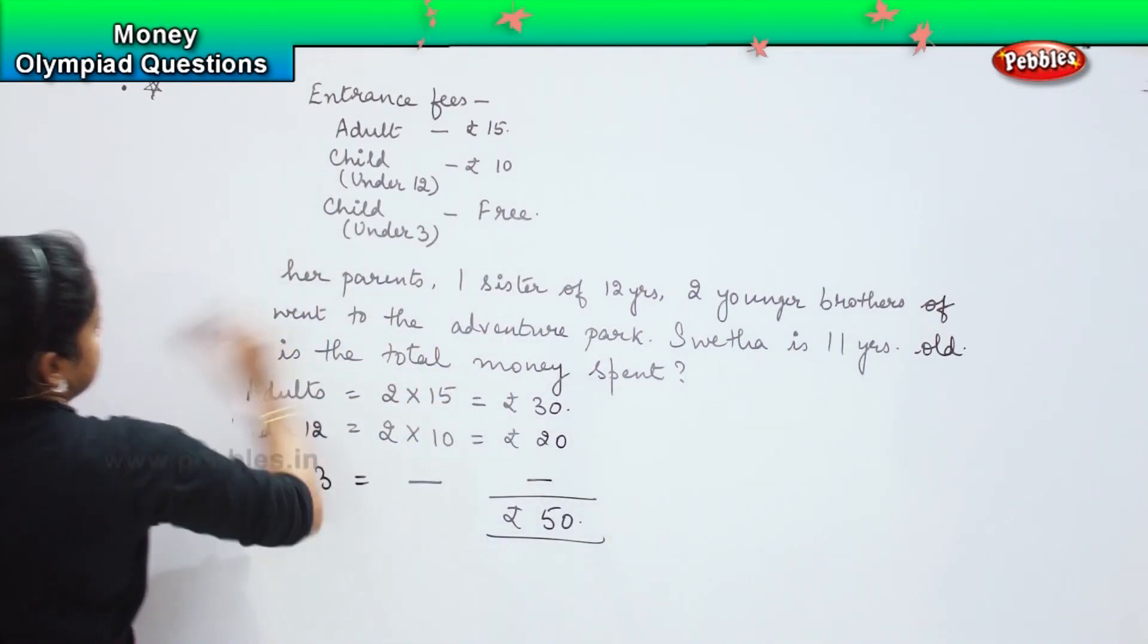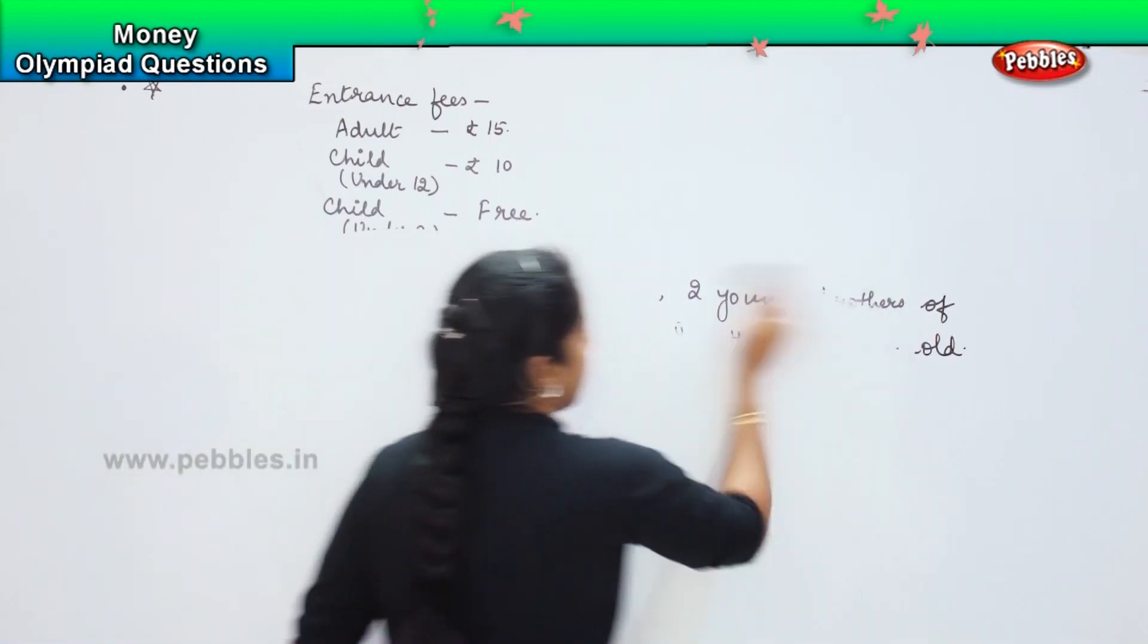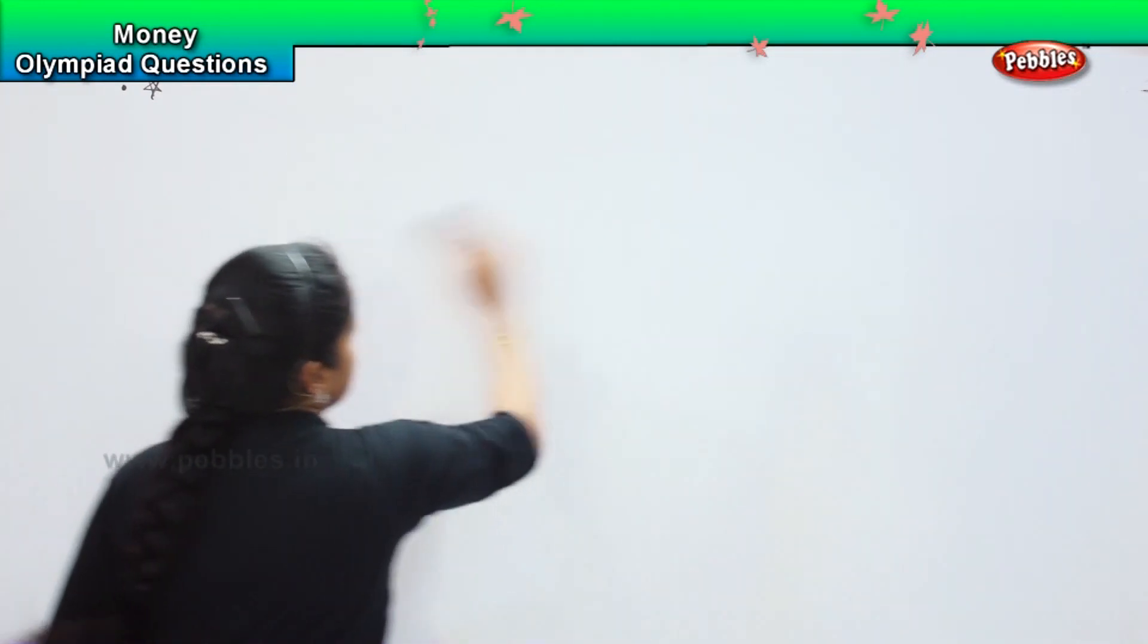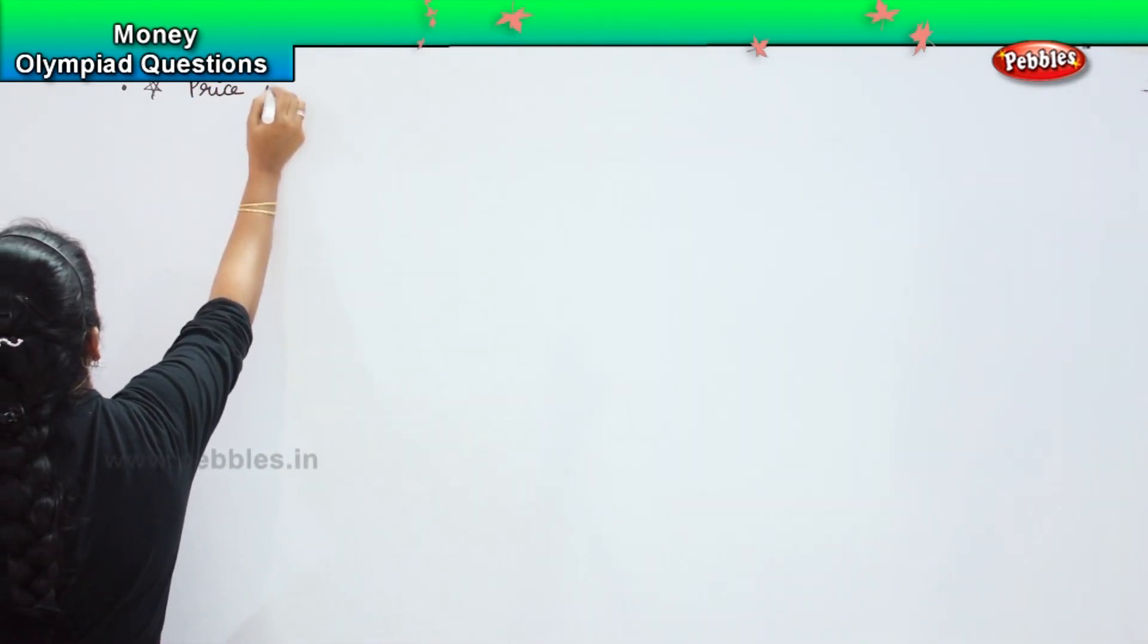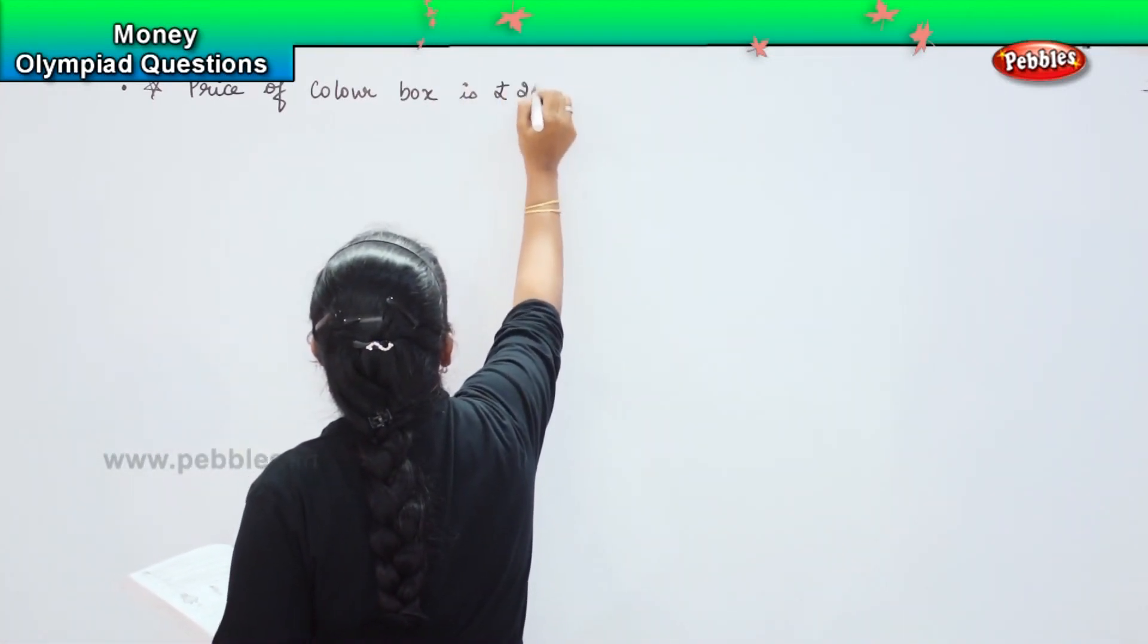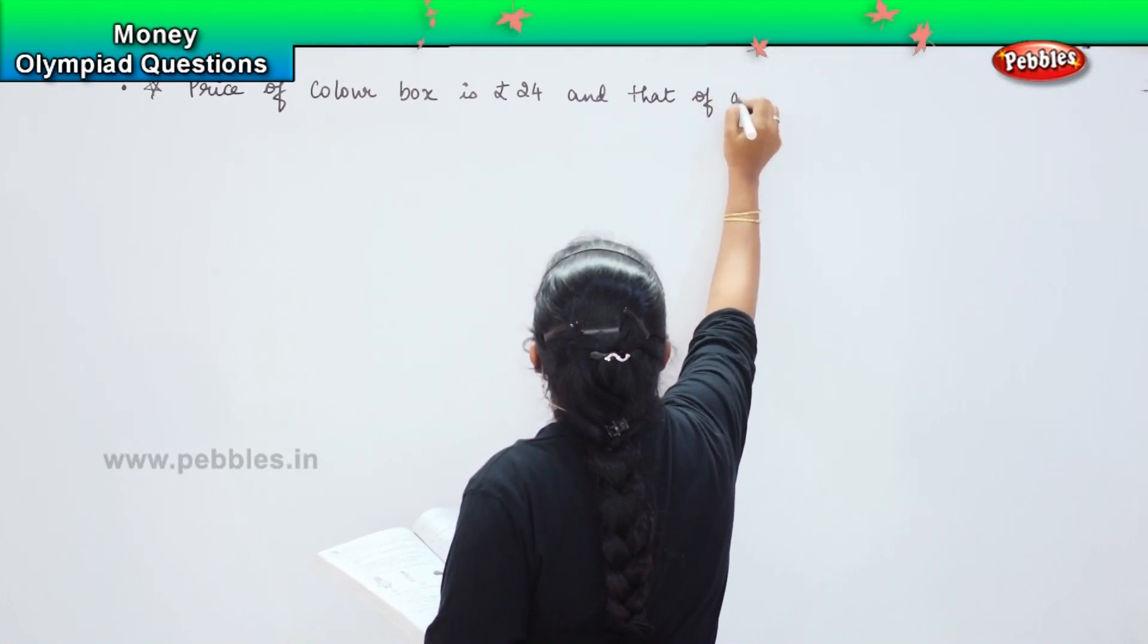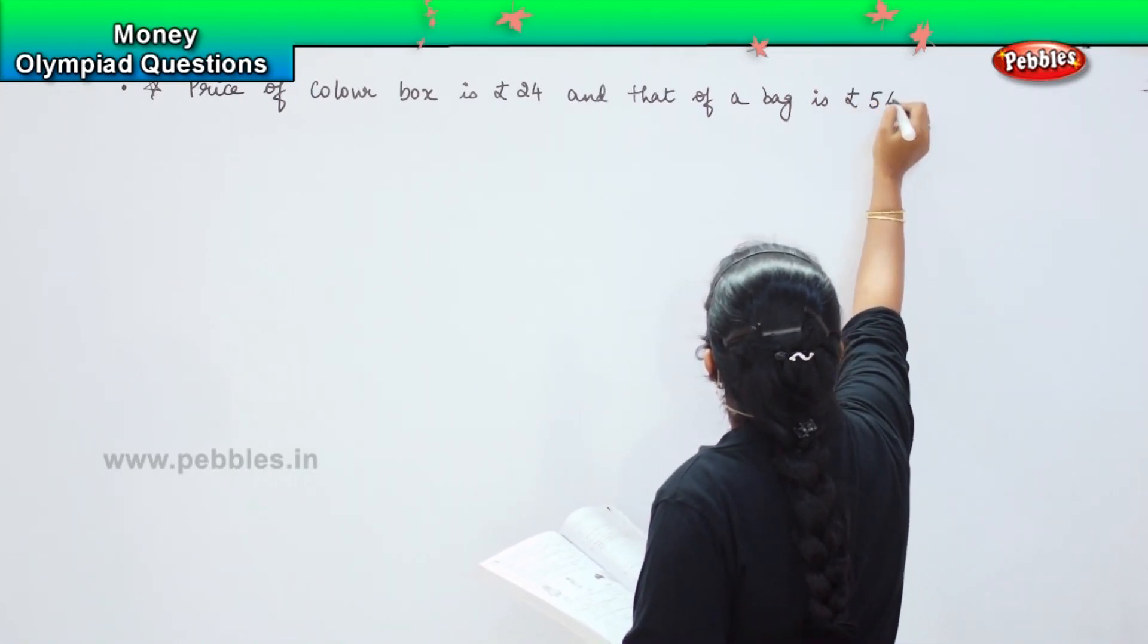So here we have the next set of questions. So are you finding it interesting? It is easy to solve and we are doing all the calculations together. We are doing additions, in sum we are doing the subtraction and if required we are doing multiplication and division as well. The next question for you is, the price of colour box is 24 rupees and that of a bag is 54.